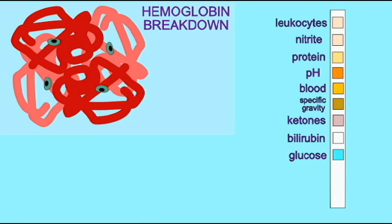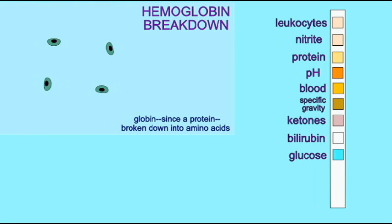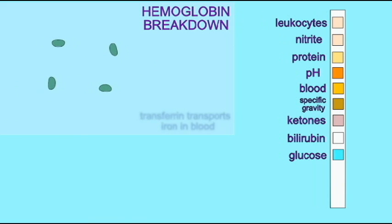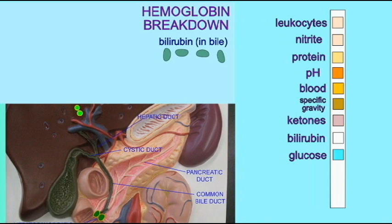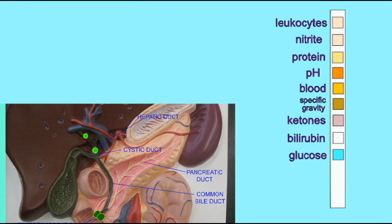When old red blood cells are broken down in the liver, heme from hemoglobin is converted into bilirubin, which is then excreted in bile. This normally would pass through bile ducts and enter the small intestine and be excreted in feces.